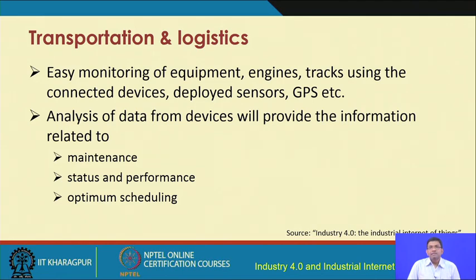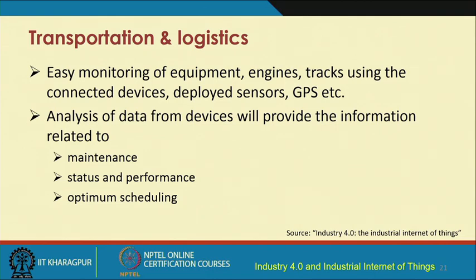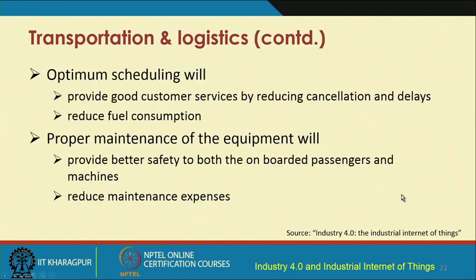This smart manufacturing platform provides reduction in operational costs, improved worker efficiency, improved safety at the workplace, resource optimization, waste reduction, and end-to-end automation. In transportation and logistics, it is possible to easily monitor equipment and engines, and track vehicles using connected devices, deployed sensors, and GPS. For example, in a logistics application you can track where different trucks are on the highway, how long they are resting, whether drivers are having adequate sleep, the condition of the trucks, and whether maintenance is needed.